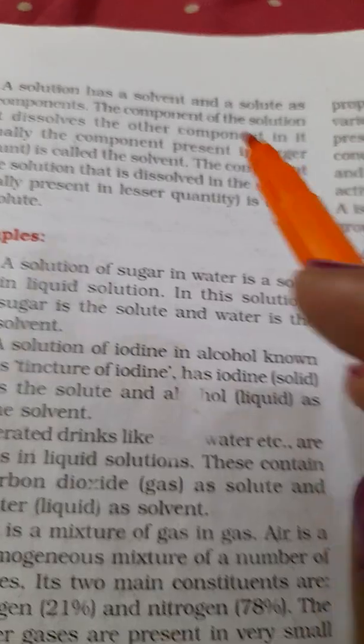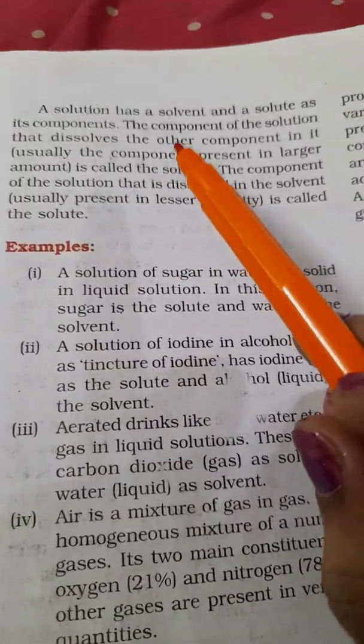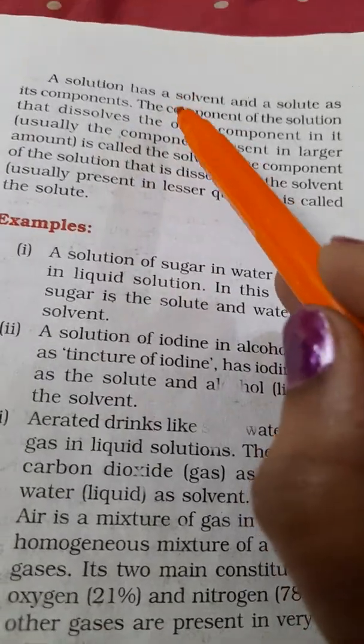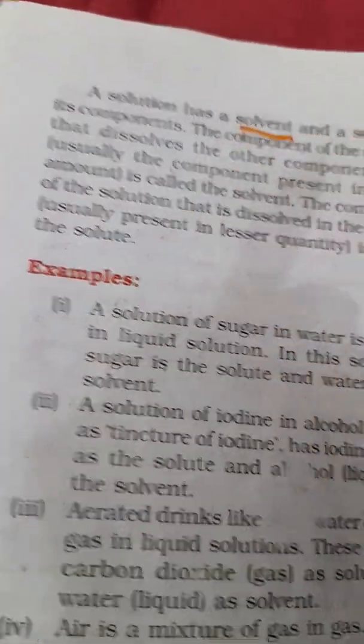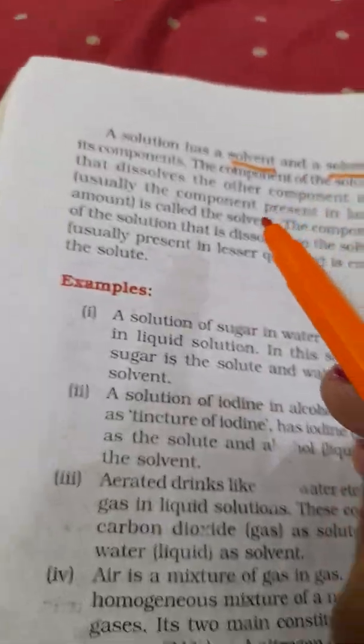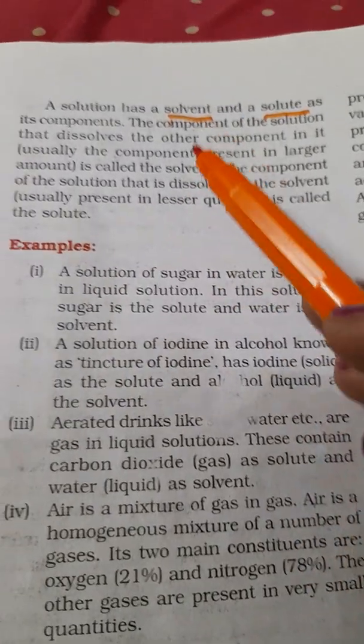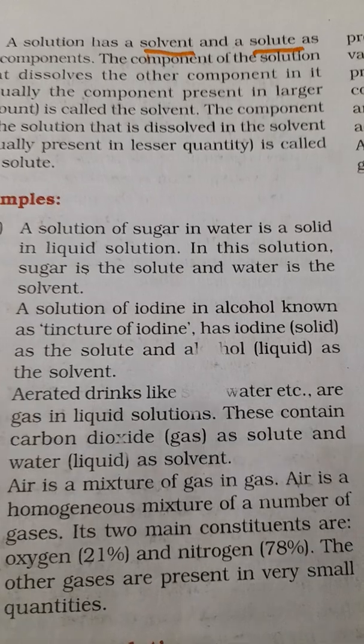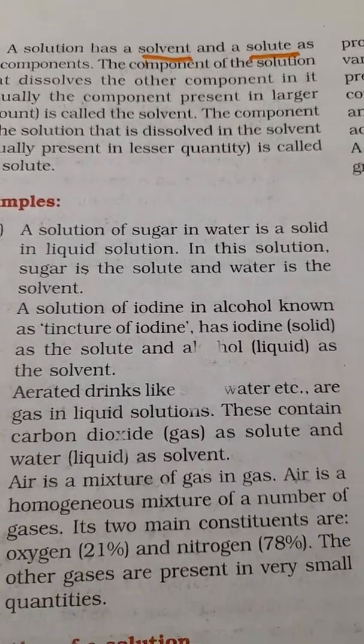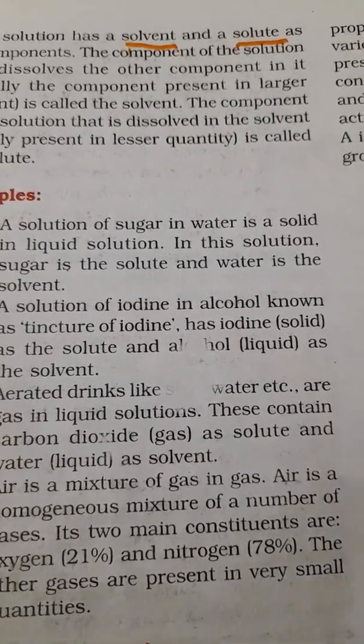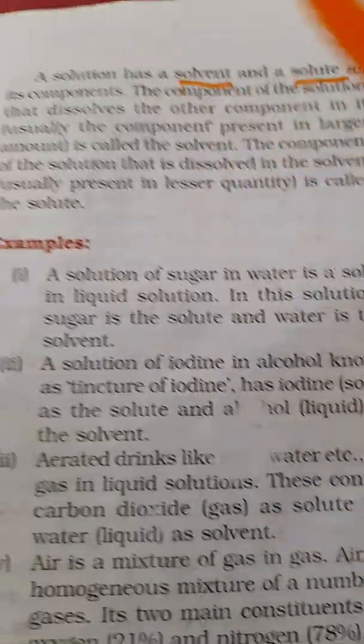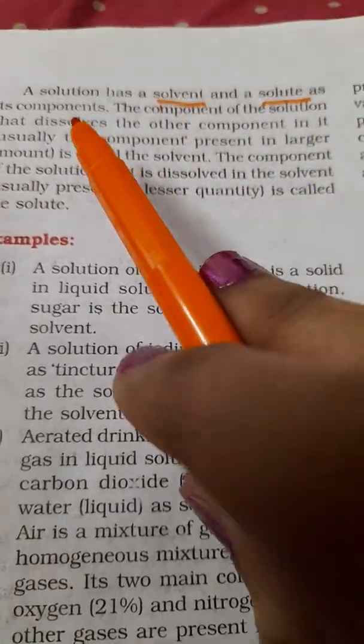A solution has two constituents: solvent and solute. If you take some water and put some sugar in it, sugar is the solute and water is the solvent. When you mix it, what you get is called solution. Solution means solute plus solvent.